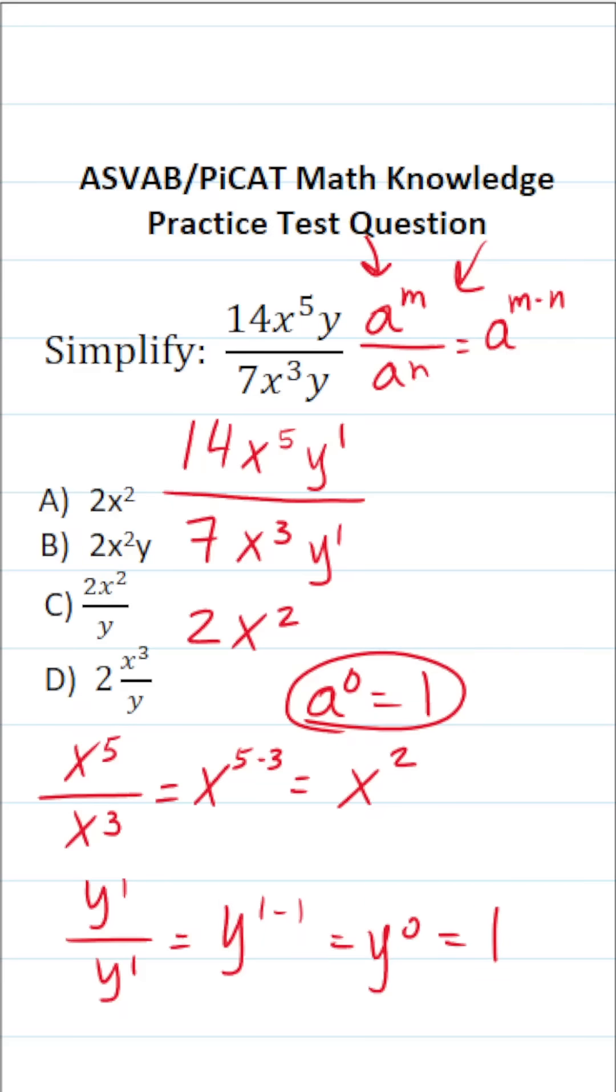This becomes y to the 1st over y to the 1st, which is times 1. Anything times 1 is itself. So the answer to this one is simply 2x squared, answer choice A.